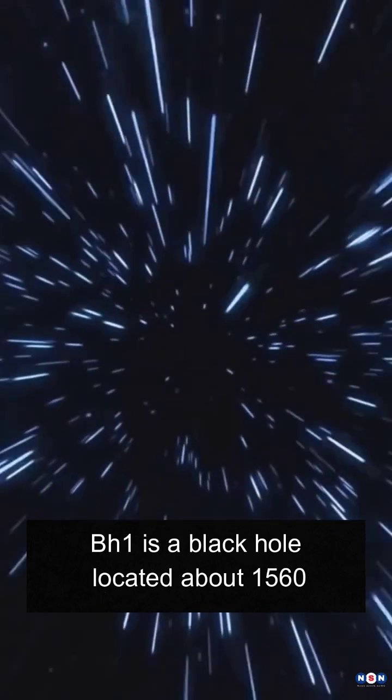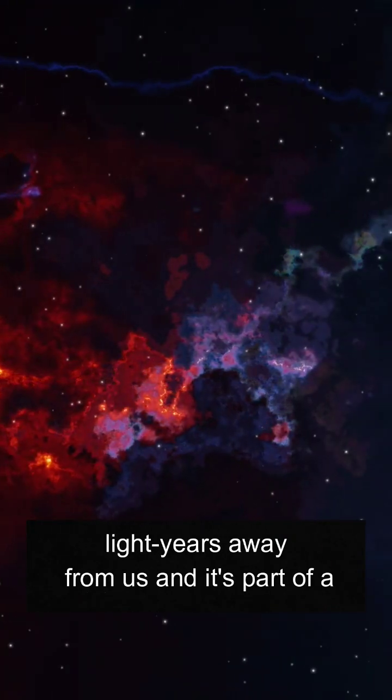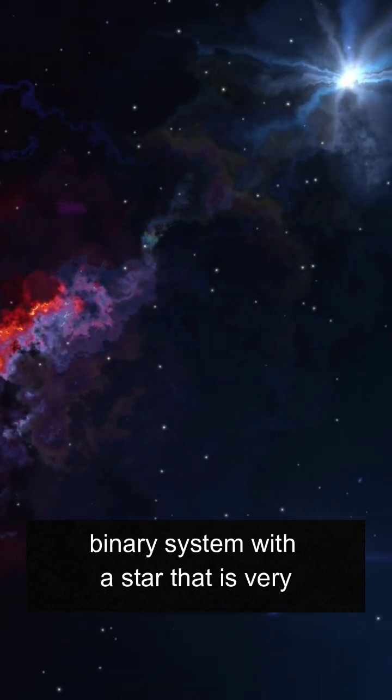Gaia BH-1 is a black hole located about 1,560 light years away from us, and it's part of a binary system with a star that is very similar to our sun.